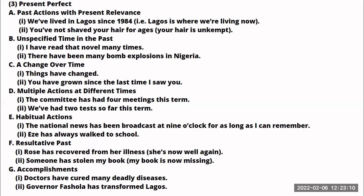We can also use the present perfect tense to talk about accomplishments or achievements — something that someone has achieved. For example: 'Doctors have cured many deadly diseases.' 'Governor Fashola has transformed Lagos.' These are accomplishments. The more you learn about the uses of the various tenses in English, the more you can use sentence variety and express your ideas with greater clarity.